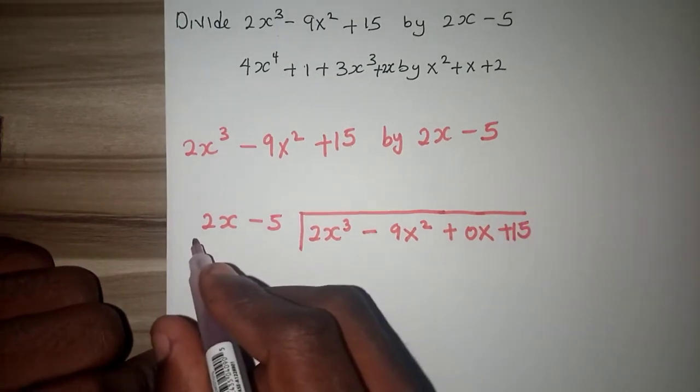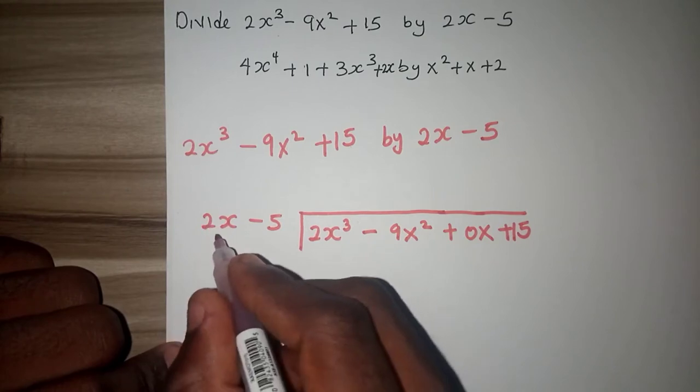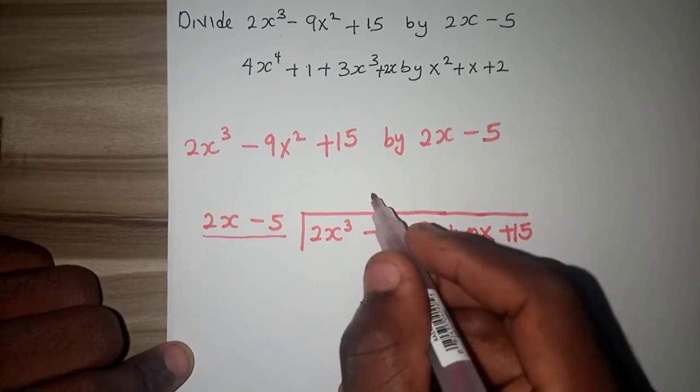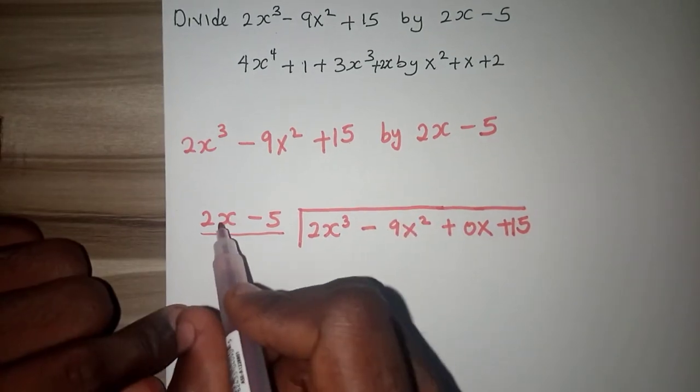Now don't forget that this is our divisor, this that you are seeing here is our divisor and this is our dividend. What I am going to get here will be our quotient. Let's start.